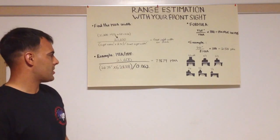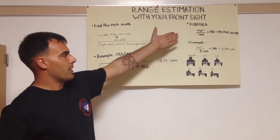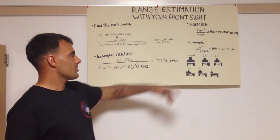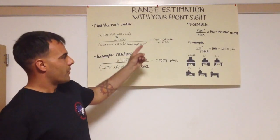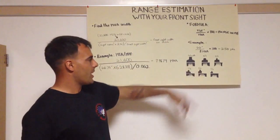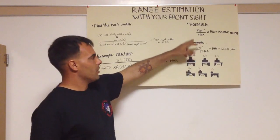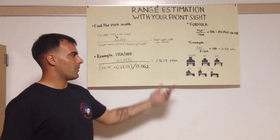So using this range estimation, I know I have an 8 minute of angle front sight. I just use my formula for minute of angle to find range. So my target, I'm going to go with a 20 inch target divided by the MOA it covers on my front sight post. So if it covers the full width of my front sight, that would be 8 minutes of angle. 20 divided by 8 is 2.5 times 100 equals 250 yards.